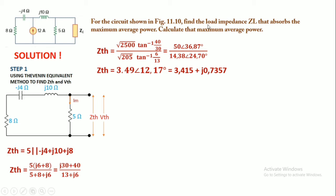Because the question is to find the load impedance ZL and we know that ZL is the conjugate of Zth, the value of ZL is 3.415 - j0.7357, and this is the final value of ZL. Now we will calculate Vth which will later be used to calculate the maximum average power.